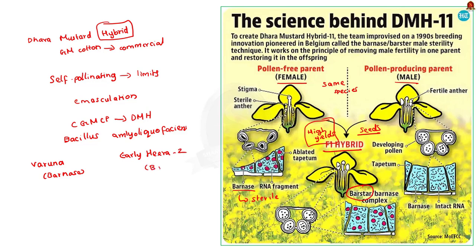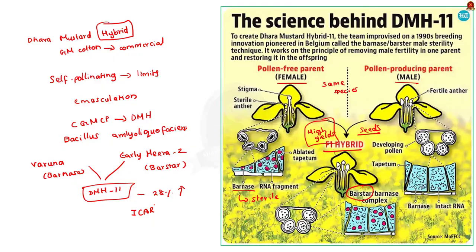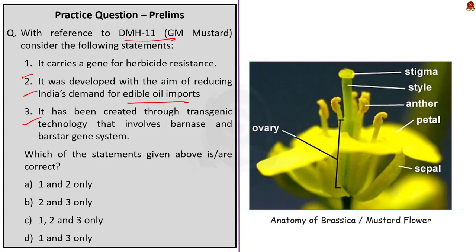Both these plants naturally do not contain these genes — they are derived from a soil bacterium and then inserted into the plant varieties. When these two varieties are bred, the result is DMH-11. DMH-11 has shown an average 28% yield increase over Varuna in contained field trials by the Indian Council of Agricultural Research. The main motive is boosting domestic oilseed and vegetable oil production, reducing import dependency. DMH-11 is also herbicide tolerant, so farmers spraying glufosinate ammonium to kill weeds don't need additional effort. The correct answer is option A, statements 1 and 2 only.